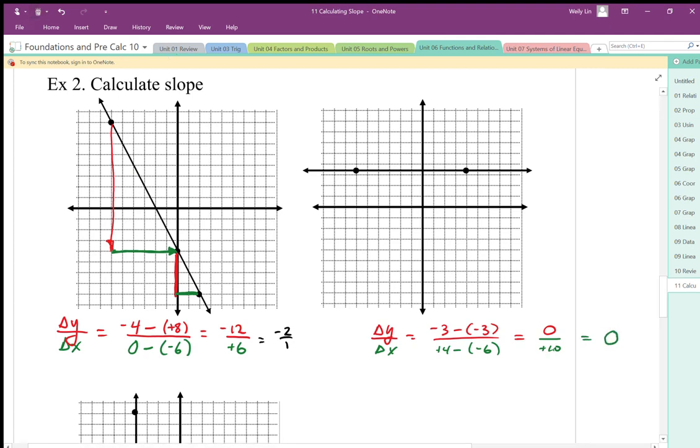The numerical value makes sense, but also if I were to describe the slope of this line, I would say that it has no slope or 0 slope.